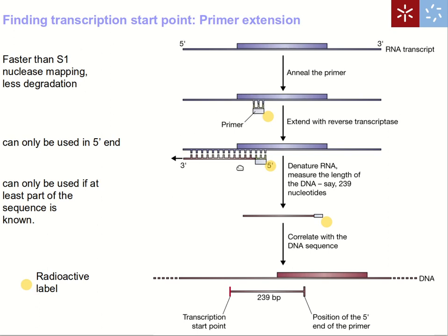We can only use primer extension for finding where transcription starts. We cannot use it for finding where transcription stops, because reverse transcriptase always goes 5' to 3' and there is no enzyme that goes the other way around.